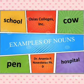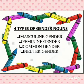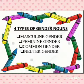Now let's learn what is noun gender. Noun gender are basically of four types: masculine gender, feminine gender, common gender, and neutral gender.